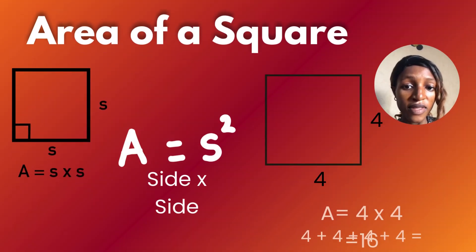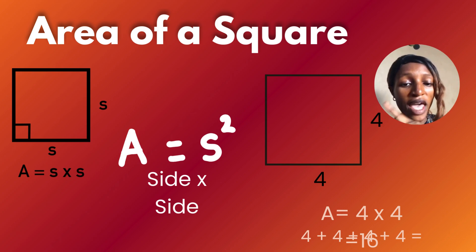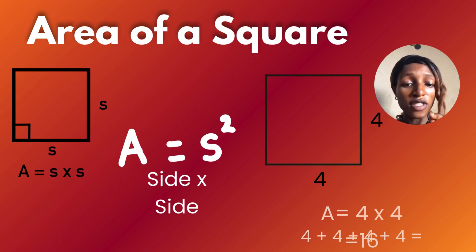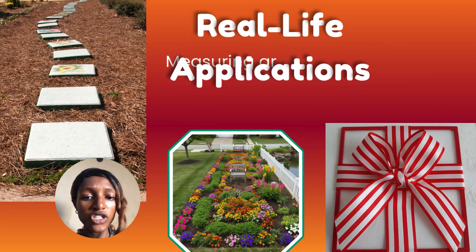Finding the area of a square: side times side. All sides are the same size. In this example, four times four — every side is four — so four times four equals sixteen square centimeters. You could also add all sides: four plus four plus four plus four equals sixteen.